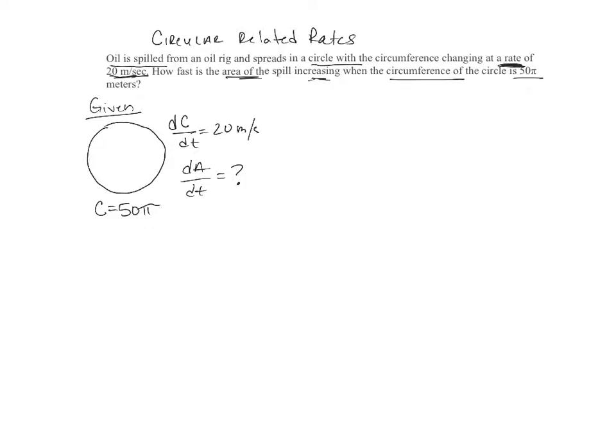Alright, so this is what we need right here. And these are all the things we are given. We also know that the formula for the circumference of a circle is 2 pi r, and the formula for the area of a circle is pi r squared.